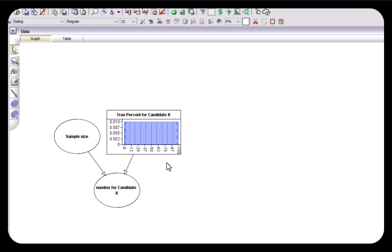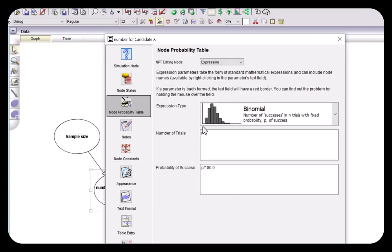Then assuming the sample is genuinely representative of the population and that all of those people sampled are independent of each other, then given a sample of size N, the number of people who say they support candidate X is just a binomial distribution where the number of trials is N and the probability of success is P divided by 100, where P is that true percentage of people in the population who support X.